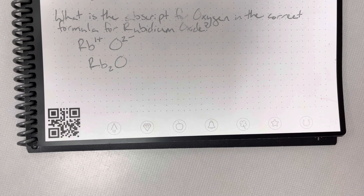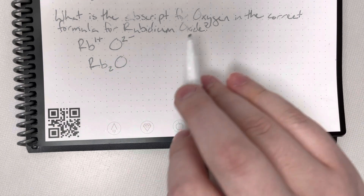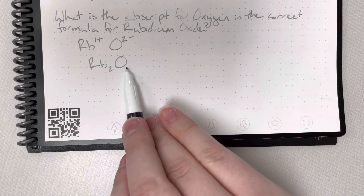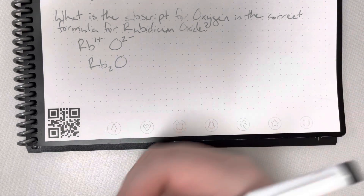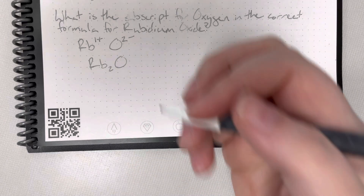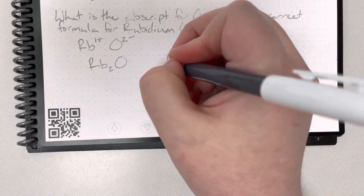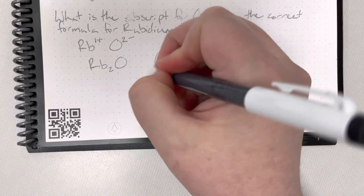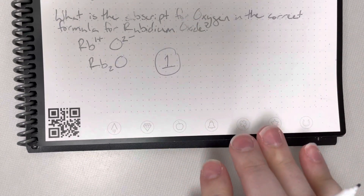The ratio 2 to 1 cannot be simplified, so the subscript for oxygen is that invisible subscript. Any invisible subscripts are implied ones, so the answer is 1.